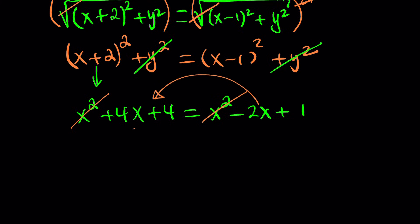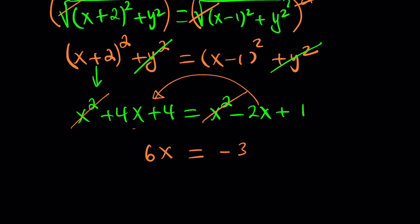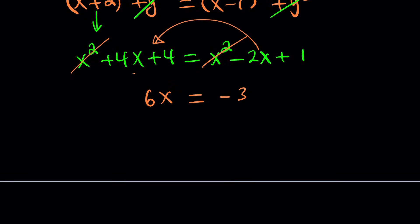This gives us 6X. And this gives us negative 3. And finally, if you divide both sides by 6, you get negative 3 over 6 or negative 1 half. And isn't this like a single solution? Nope.